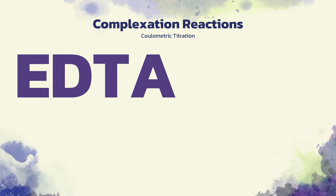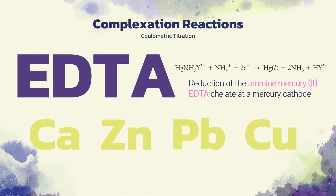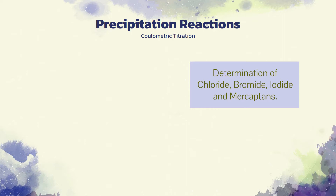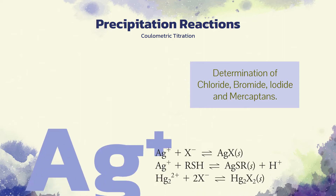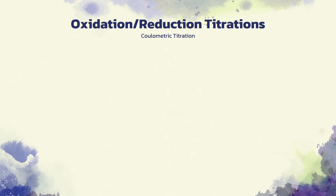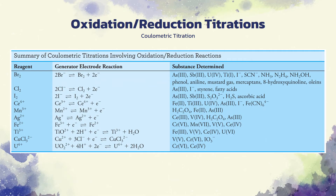Coulometric titrations with EDTA are carried out by reduction of the amine mercury(II)-EDTA chelate at a mercury cathode. Because the mercury chelate is more stable than the corresponding complexes of calcium, zinc, lead, or copper, complexation of these ions occurs only after the ligand has been freed by the electrode process. Several precipitating reagents can be generated coulometrically. The most widely used of these is the silver ion, which is generated at a silver anode. Coulometric titrations have also been developed for many, but not all, redox titrations. A variety of redox reagents can be generated coulometrically; for example, the coulometric generation of bromine forms the basis for a large number of coulometric methods.